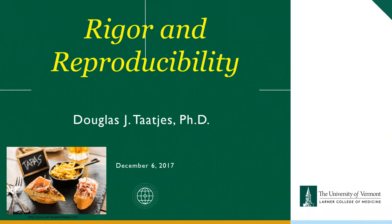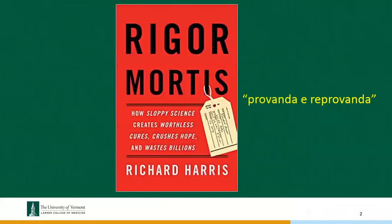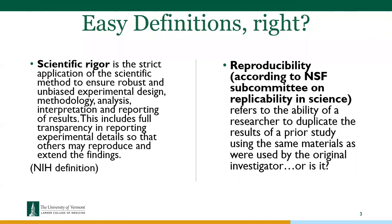This was the book 'Rigor Mortis,' and one of the things I really liked was this phrase: 'provando e riprovando.' Does anybody know what that means in Italian? Try and try again — test and re-test. This was from just after Galileo died around 1642. A group of experimentalists in Italy began publishing their work, and their model was test and test again. That certainly holds true to what we're doing today.